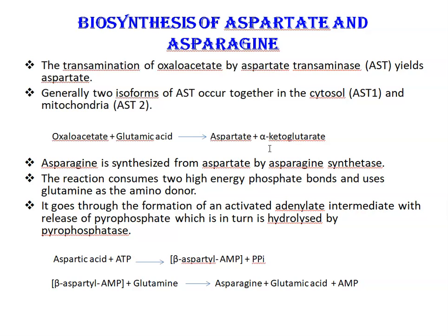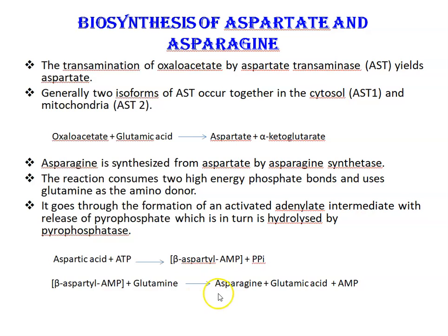Generally, two isoforms of aspartate transaminase occur together: in the cytosol, AST1, and in mitochondria, AST2. Then, asparagine is synthesized from aspartate by the asparagine synthetase enzyme. The reaction consumes two high-energy phosphate bonds and uses glutamine as the amino donor in this second reaction. The reaction goes through the formation of an activated adenylate intermediate, beta-aspartyl adenosine monophosphate, with the release of a pyrophosphate group, which is in turn hydrolyzed by pyrophosphatases. When this intermediate reacts with glutamine, the products are asparagine, glutamic acid, and adenosine monophosphate.